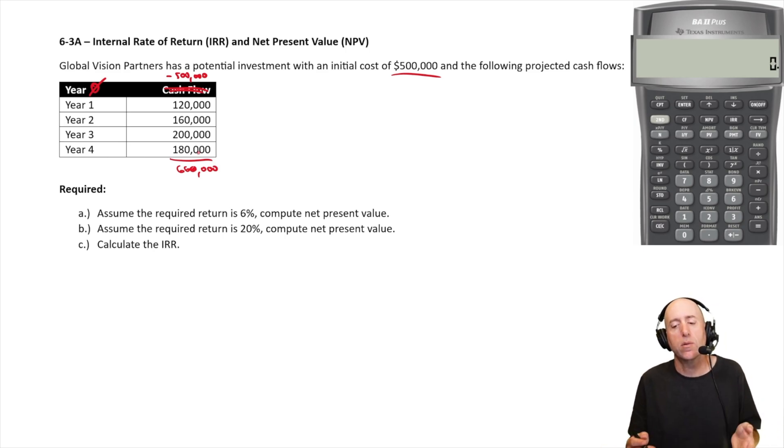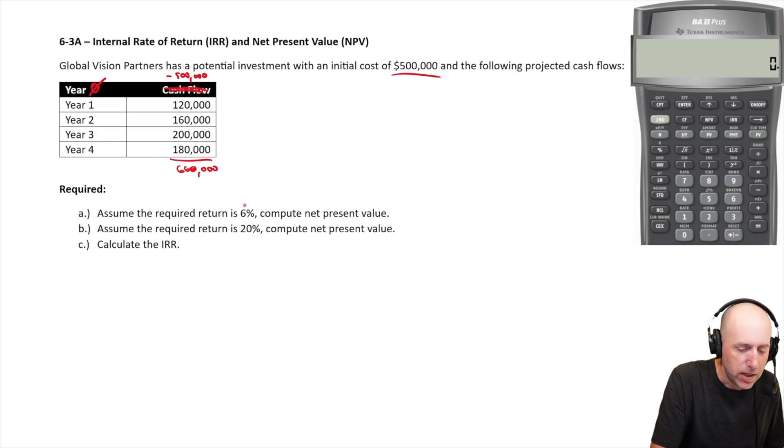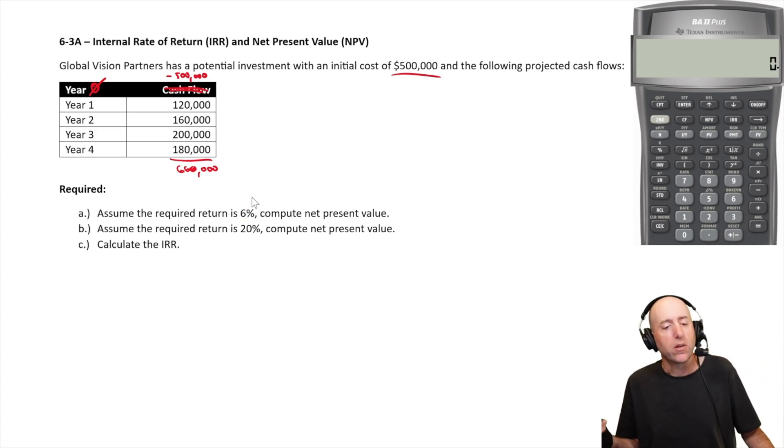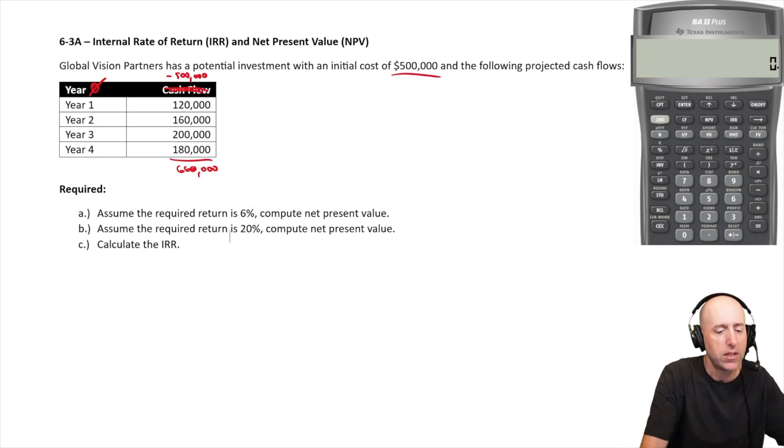But a little bit more sophisticated is to bring in the time value of money. And to bring in the time value of money, you need a discount rate. And so we're going to figure out the present value of these payments using a 6% discount rate. So how do I discount these cash flows?